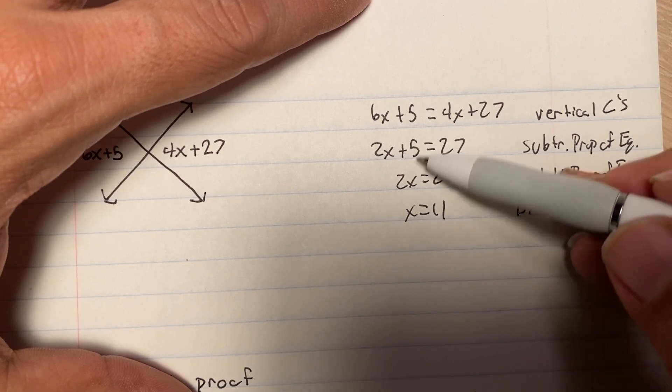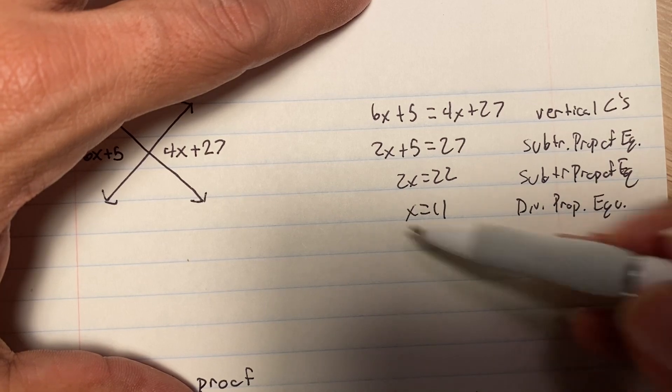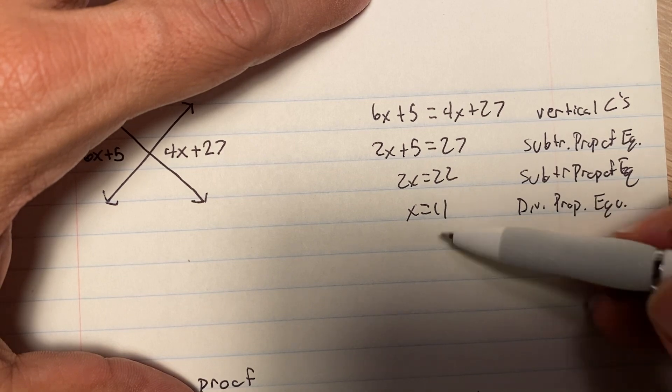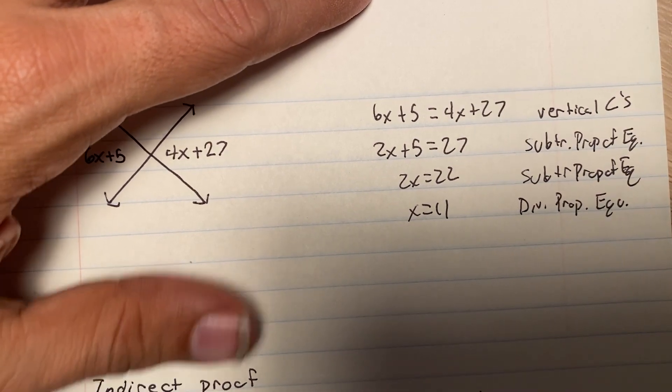2x equals 22. Where'd the 5 go? Oh, you did the subtraction property of equality. Where'd the 2 go here? Oh, you did the division property of equality. This always tells you how you got here. So, this is a two-column proof.